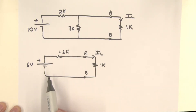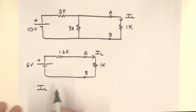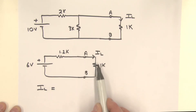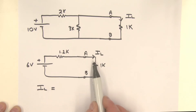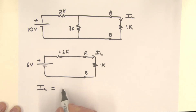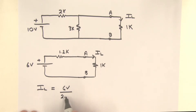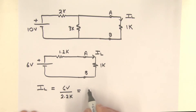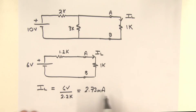Let's take the simple case of using the Thevenin circuit to find the load current. It's a simple series circuit: we've got 1.2K plus 1K, which is 2.2K. So the load current will be 6 volts divided by 2.2K. Working that out, it comes to 2.73 milliamps — an easy calculation with the Thevenin equivalent circuit.